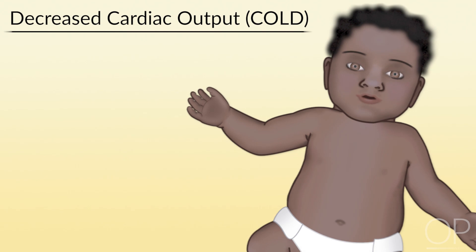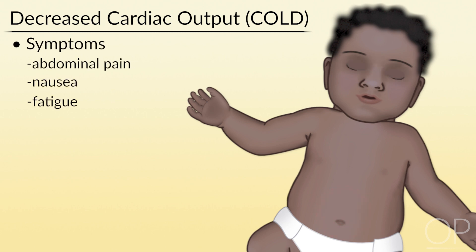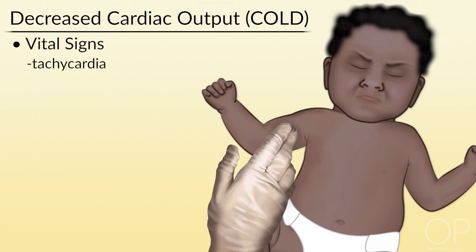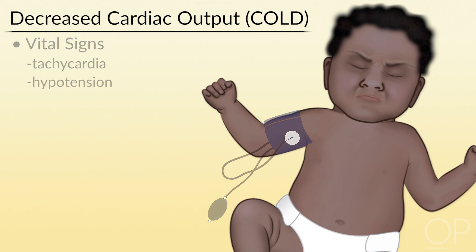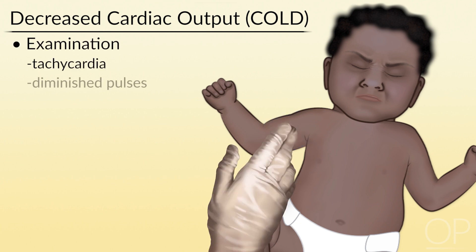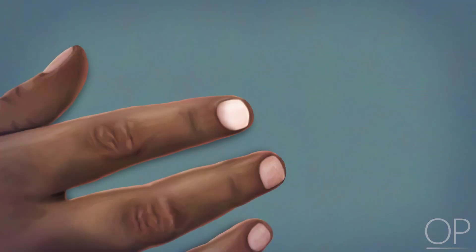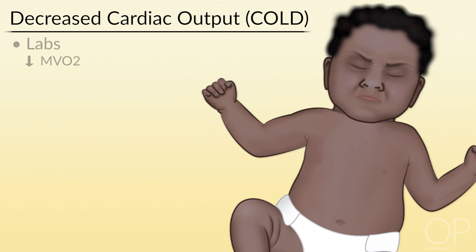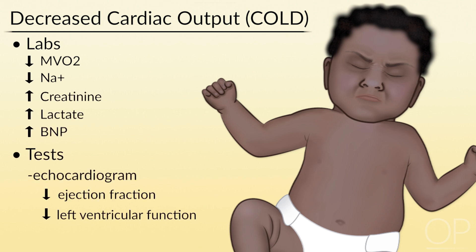In patients with decreased cardiac output who are cold, they will present with symptoms of abdominal pain, nausea, fatigue, fussiness, or pale or gray color. Vital sign review may demonstrate increased heart rates or decreased blood pressures. Exam may show tachycardia, decreased pulses, delayed capillary refill, cool extremities, and in severe cases, altered mental status. Labs may demonstrate decreased mixed venous oxygen, decreased sodium, increased creatinine, elevated lactate, and elevated BNP. Echo may demonstrate decreased systolic function with a decreased ventricular ejection fraction.